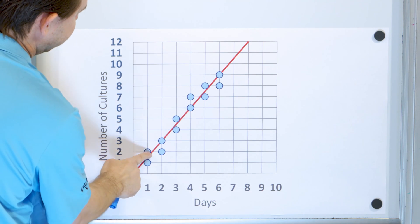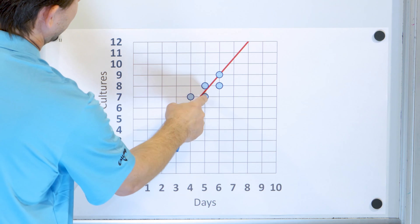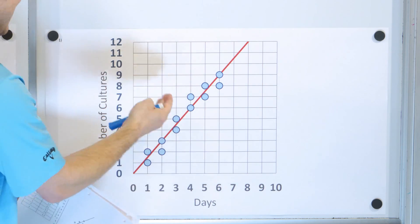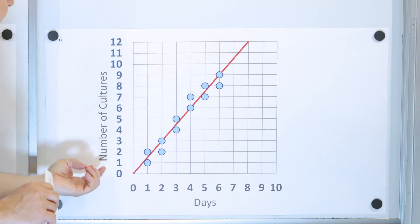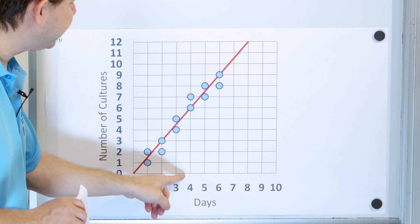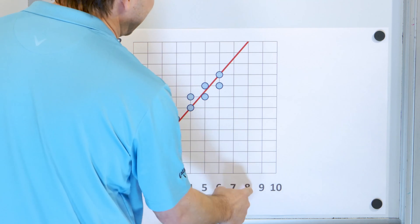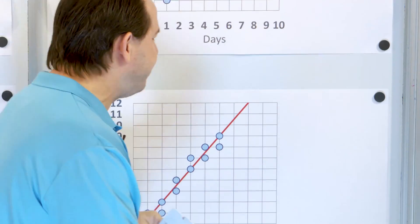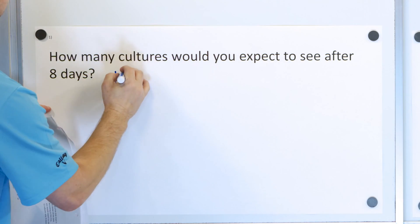I'm drawing what I think is the line of best fit — four points are above, five points are below, and some points are on the line itself. You could shift the line a little bit this way or that way, but it won't affect it greatly. The line has to be somewhere around here. We can use this to predict — after eight days, following the line, it's going to be right up here at 12 cultures.